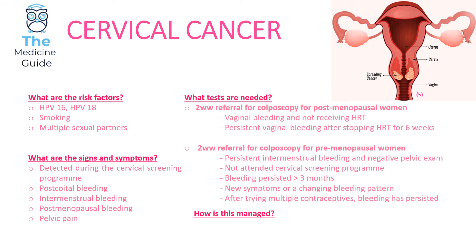Women will need a two-week wait referral for colposcopy if they are post-menopausal and suffering from vaginal bleeding while not receiving HRT, suggesting the bleeding isn't oestrogen-related — though first-line concern remains endometrial cancer. Also if there is persistent vaginal bleeding after stopping HRT for six weeks. Pre-menopausal women need a two-week wait referral for colposcopy if they have persistent inter-menstrual bleeding with a negative pelvic exam, if they've never attended the cervical screening programme, if bleeding has persisted for more than three months, if there are new symptoms or a changing bleeding pattern, or if bleeding persists after trying multiple contraceptives.